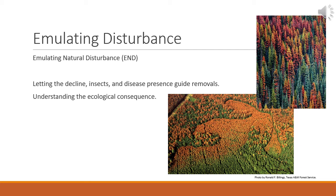Removing trees that are showing signs or symptoms of health issues when they are present within a planted group could improve the situation for the remaining trees, whereas nursing an ailing tree may simply encourage susceptibility in more trees. Some examples of letting health issues guide management might be the removal of a small group or each alternating spruce when needle cast becomes present. This removal increases airflow and allows drier conditions that are less conducive to fungal sporulation.